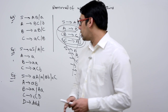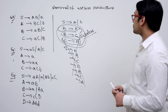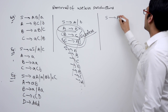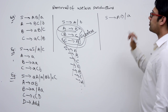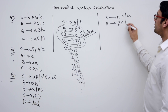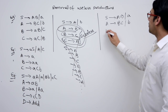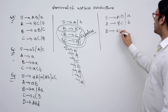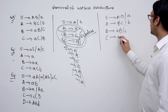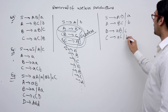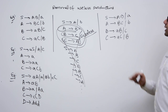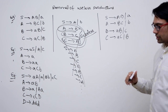Let us take the first example. The grammar is: S derives AB or small 'a', A derives BC or small 'b', B derives AB or C, and C derives AC or B.